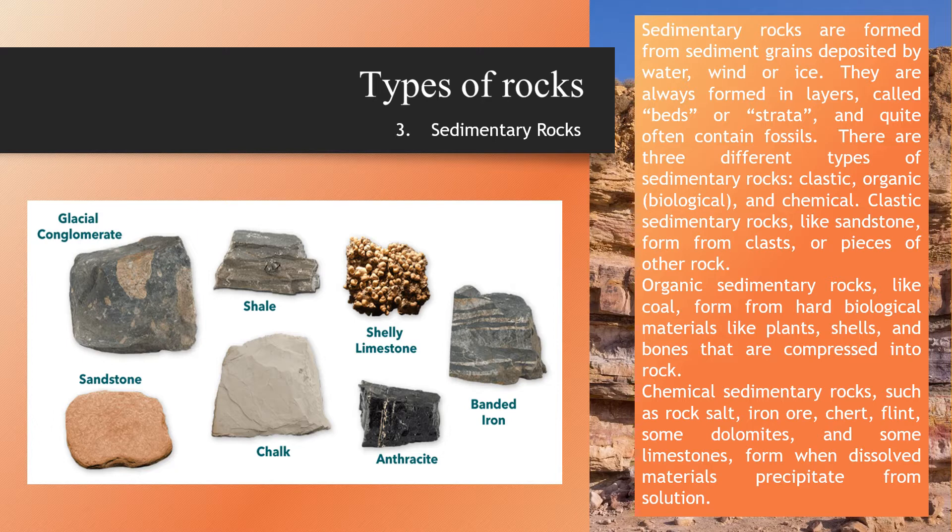Clastic sedimentary rocks, like sandstone, form from clasts or pieces of other rock. Organic sedimentary rocks, like coal, form from hard biological materials like plants, shells, and bones that are compressed into rock. Chemical sedimentary rocks, like rock salt and some limestone, form when dissolved materials precipitate from solution. Look at the picture to see more examples of sedimentary rocks.